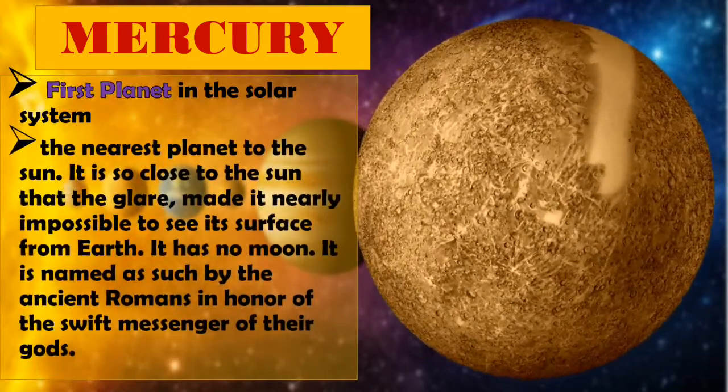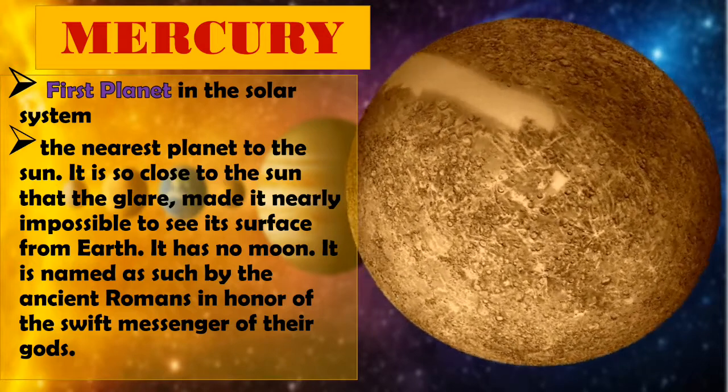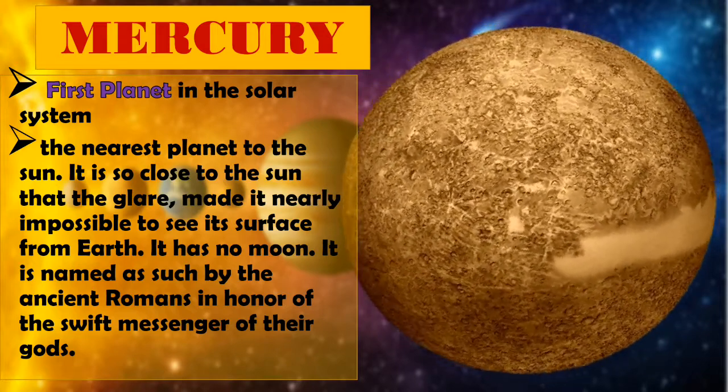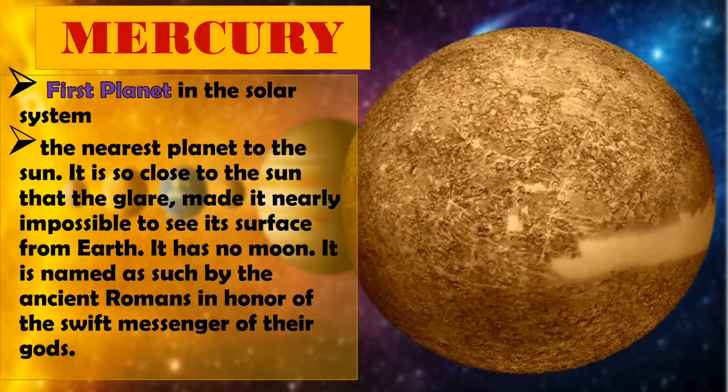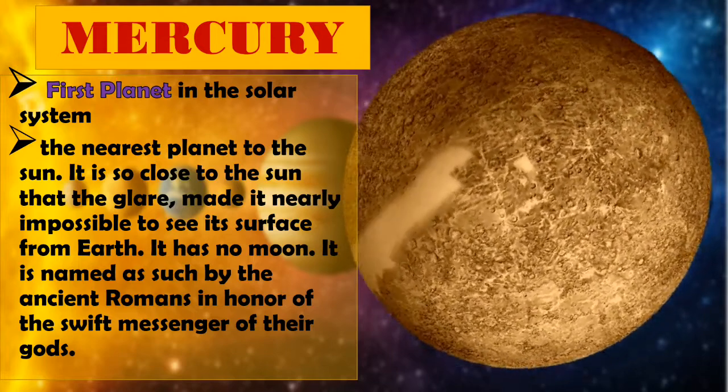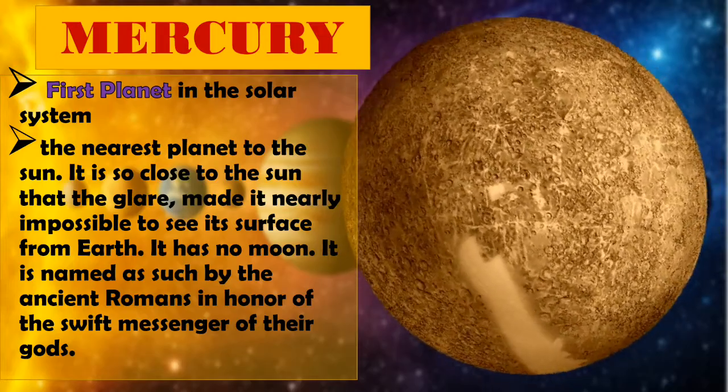Mercury, first planet in the Solar System. The nearest planet to the Sun. It is so close to the Sun that the glare made it nearly impossible to see its surface from Earth. It has no moon. It is named as such by the ancient Romans in honor of the swift messenger of their gods.